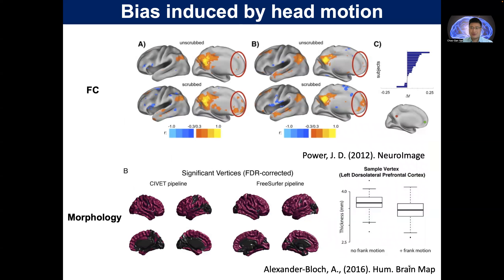When you do the analysis, if you do not carefully do quality control — for example, high motion effects — you can read the Powers neuroimaging paper. When the data is included without high motion quality control, you will see there are no effects in prefrontal cortex. But if you do correct head motion correction like scrubbing, you can see the effect recovered. So head motion has big artifacts in our data, and this is detrimental in many studies.